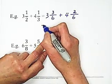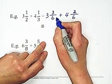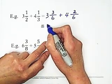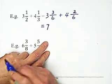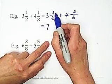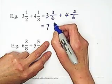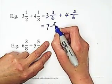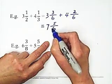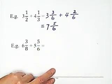Then we add the whole number portion, which is 7. Then add the numerators, 3 plus 2 equals 5, and keep denominators unchanged. So the answer is 7 and 5 over 6.